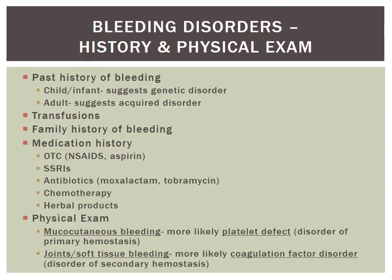When taking a history for a patient with a bleeding issue, it's important to look at past history of bleeding. Bleeding early in childhood suggests a genetic disorder, while bleeding starting in adulthood suggests an acquired disorder. Important history includes dental procedures, obstetric and gynecologic history including menstrual history, post-surgical bleeding, bleeding after circumcision in males, any bleeding after trauma, history of transfusions, and family history of bleeding disorders.